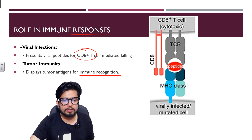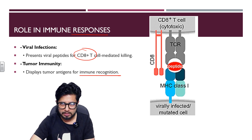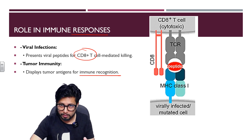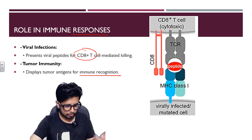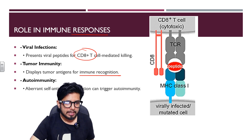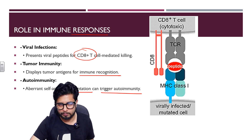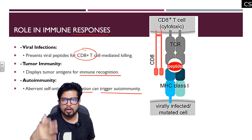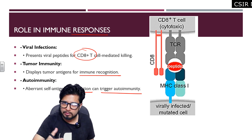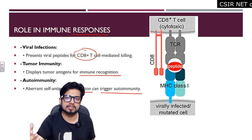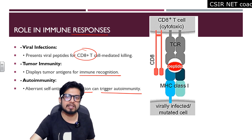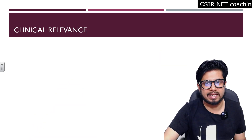For tumor immunity, MHC class 1 displays tumor antigens for immune recognition — even cells undergoing transformation from benign to malignant can showcase this externally. Regarding autoimmunity, aberrant self-antigen presentation can trigger autoimmunity. If MHC class 1 is not properly expressed by nucleated cells, those healthy cells become targets of natural killer cells.